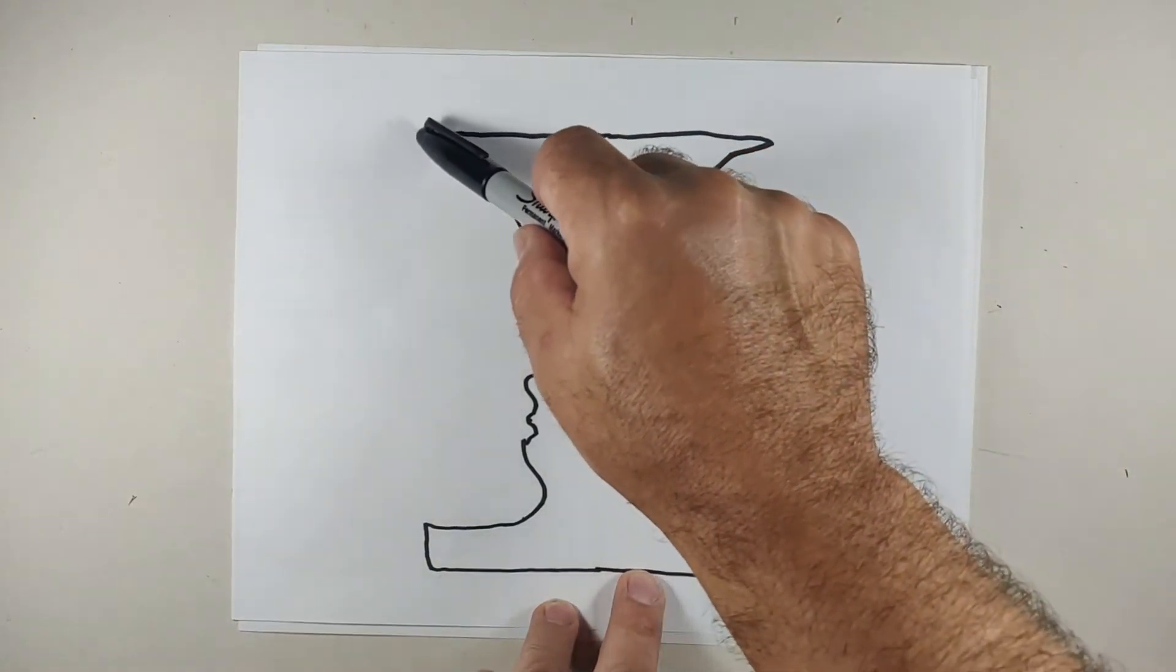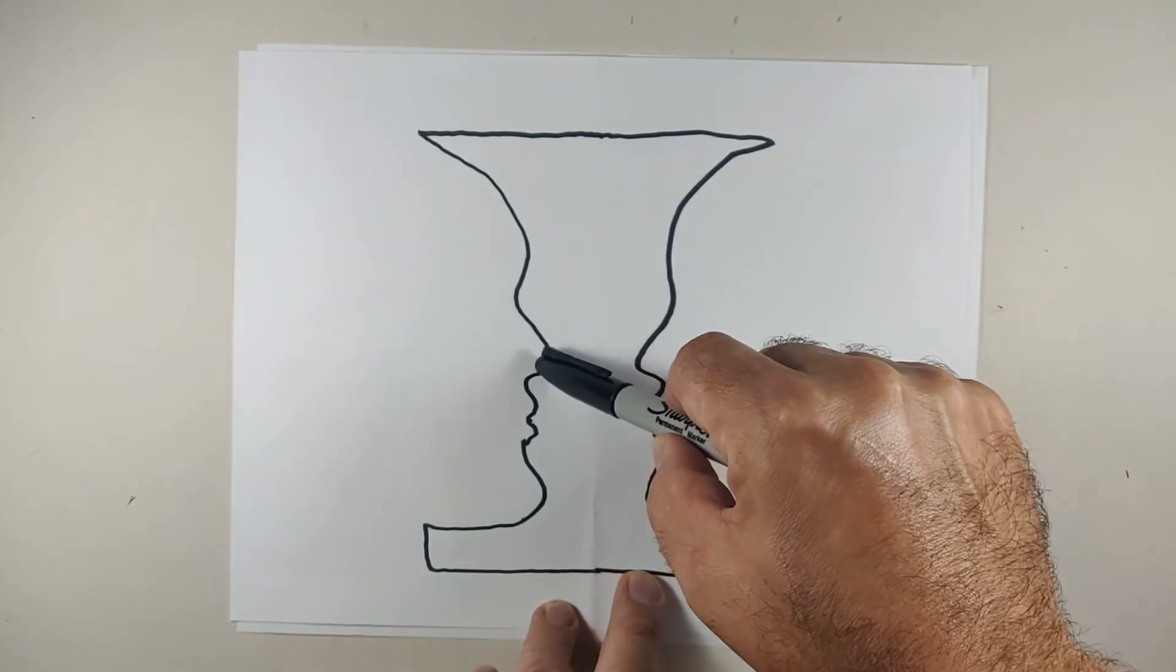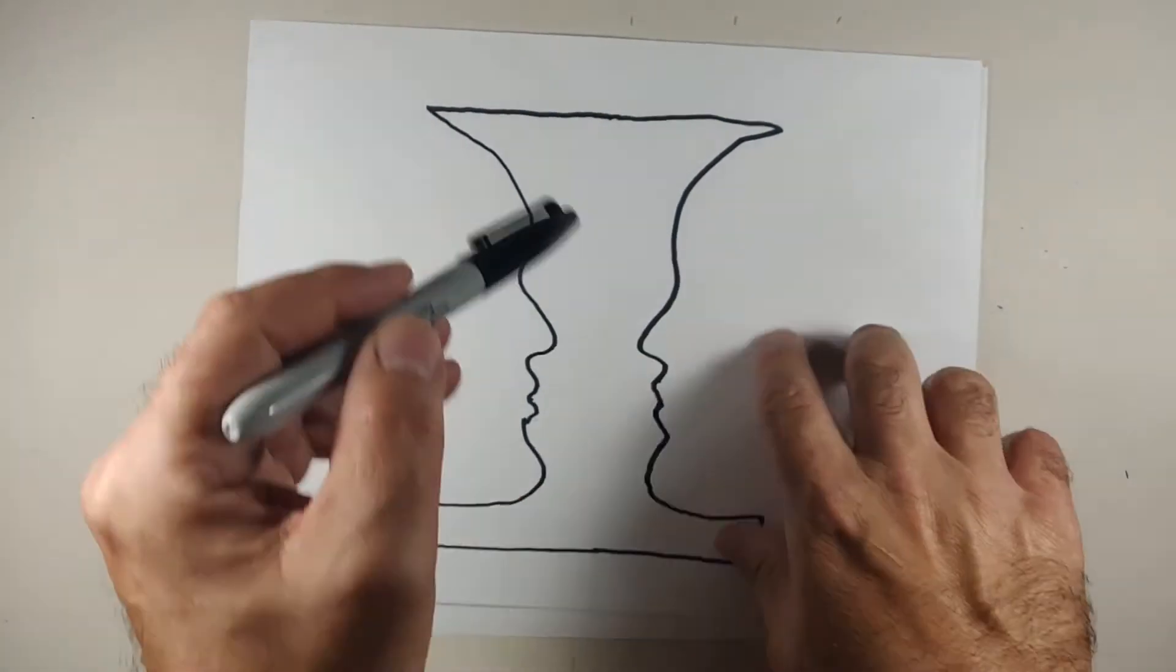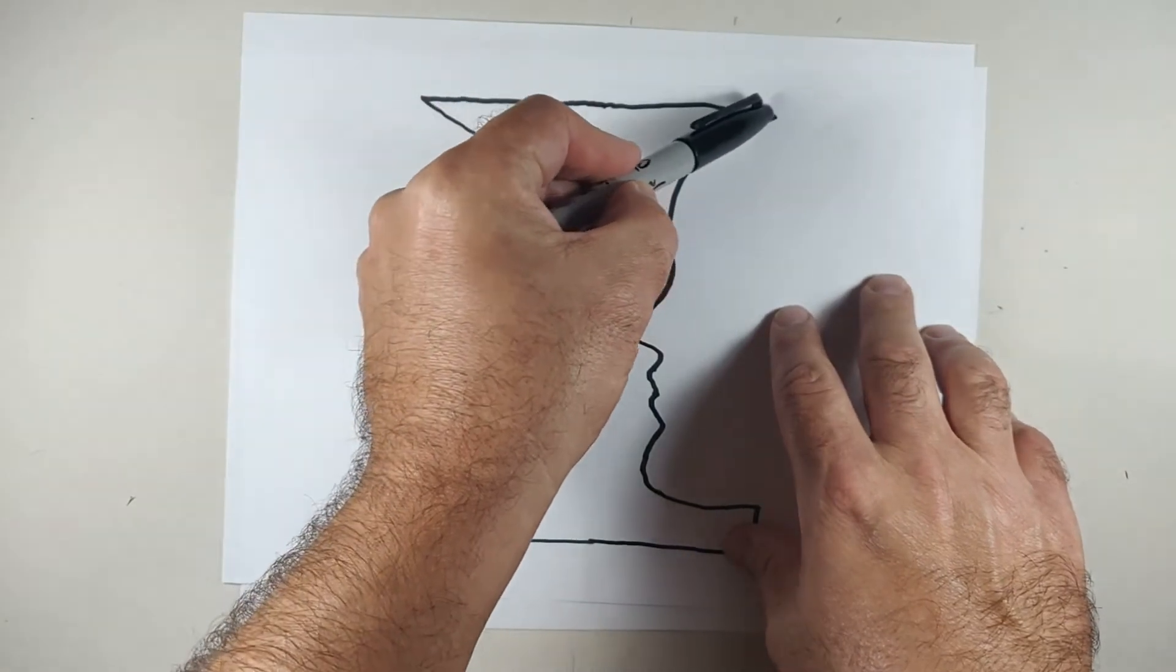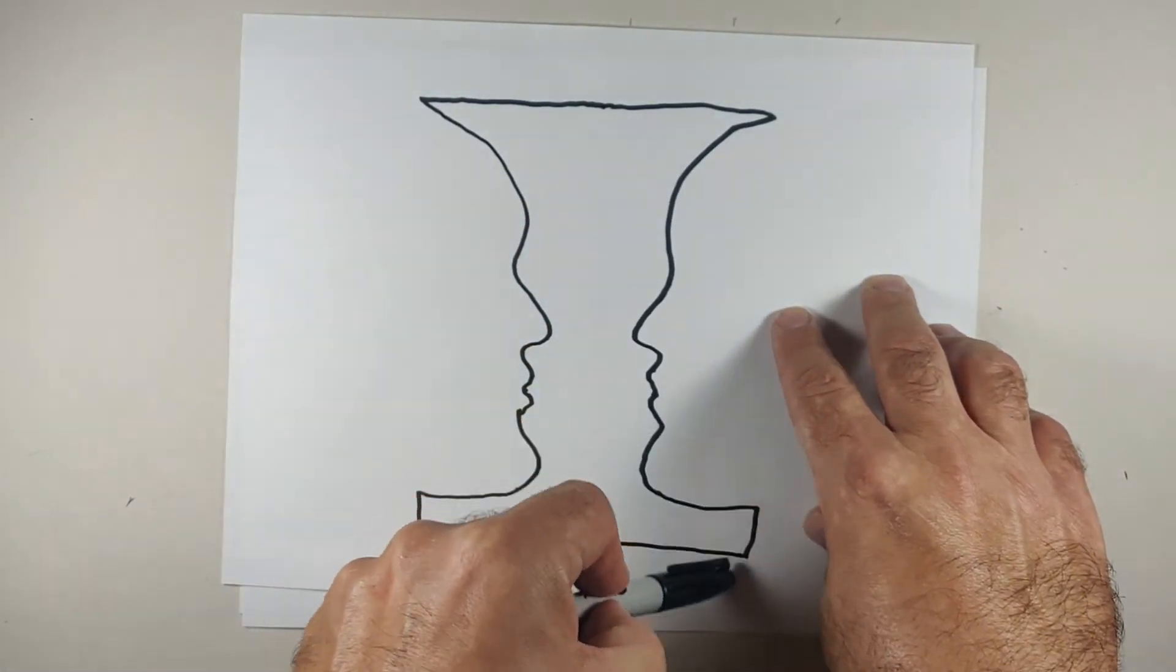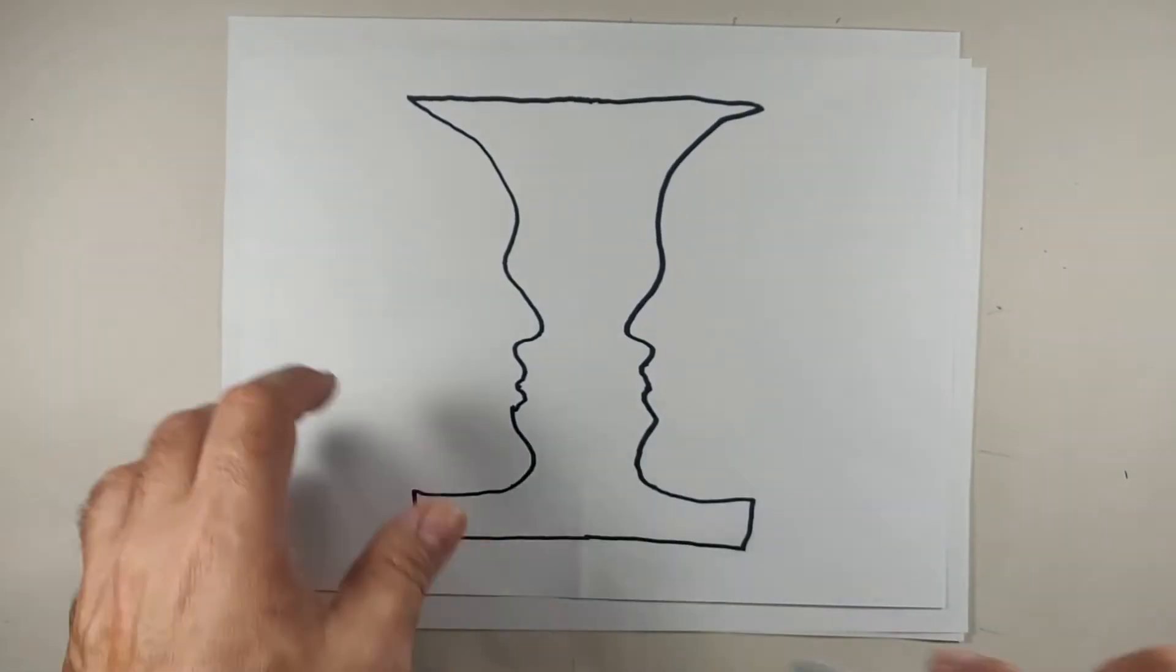With your right hand, you're going to draw a face looking in. Then you're going to switch over to your left hand and draw the mirror image looking in. You want to try to keep that same spacing throughout. I'm going to give it a try.